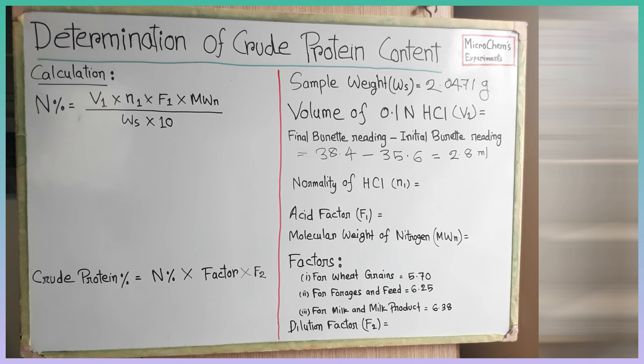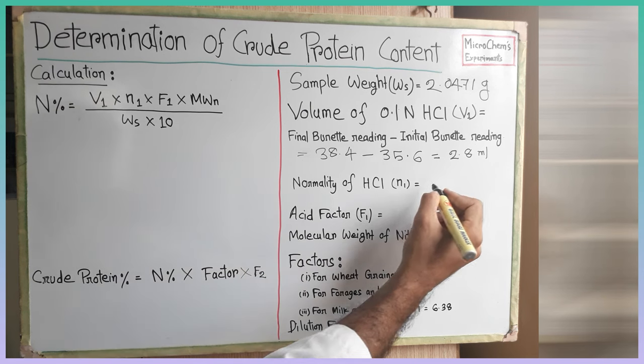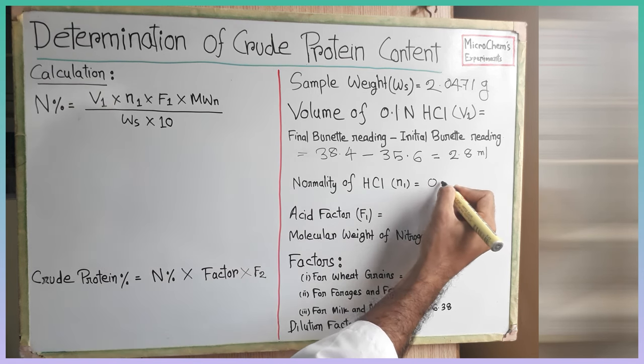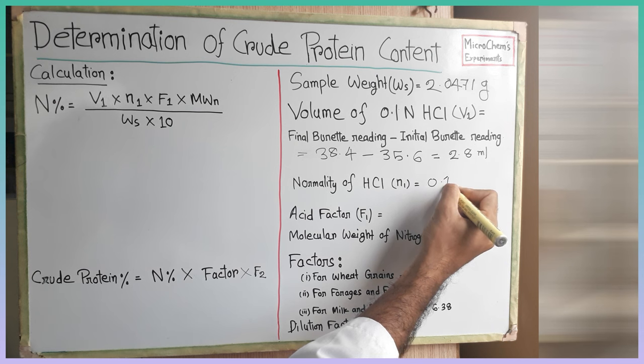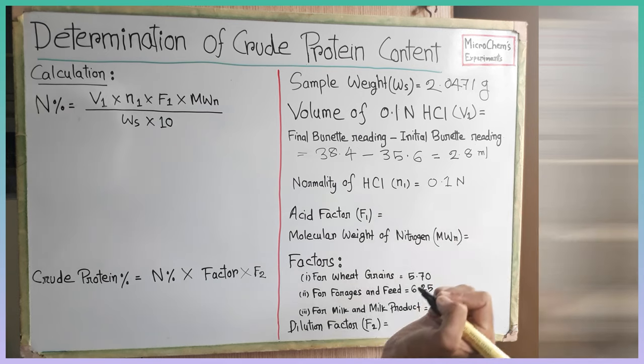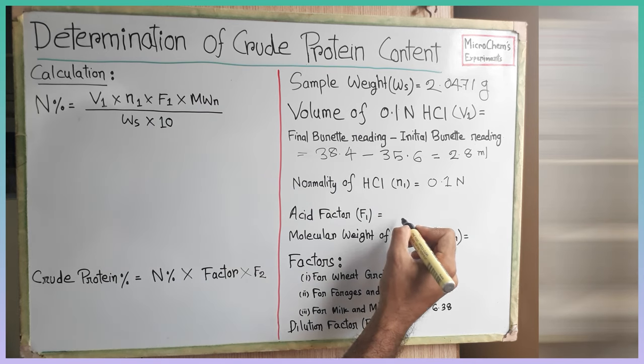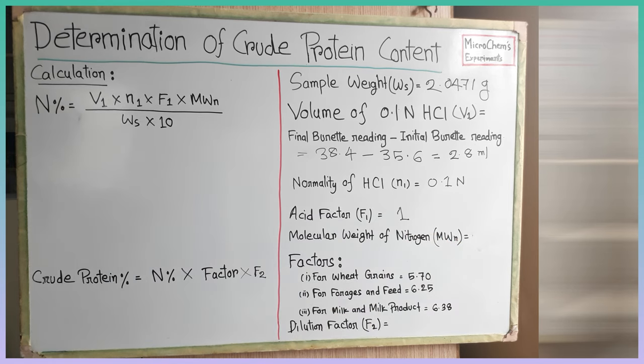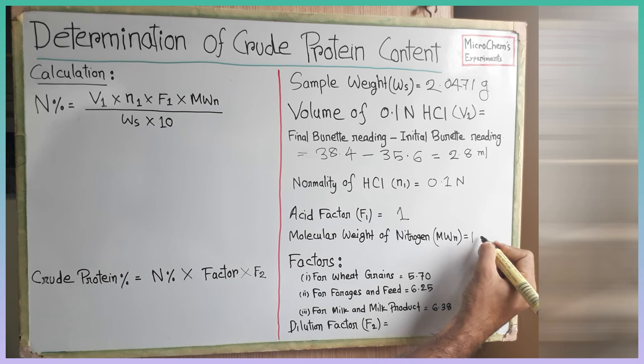Normality of HCl is 0.1. If the standardization of HCl showed another value other than 0.1, then we would use that standardized value here instead of 0.1 normal. We used hydrochloric acid in this titration. That's why we know the acid factor F1 is 1. We all know the molecular weight of nitrogen is 14.007. So the value of MWN is 14.007.